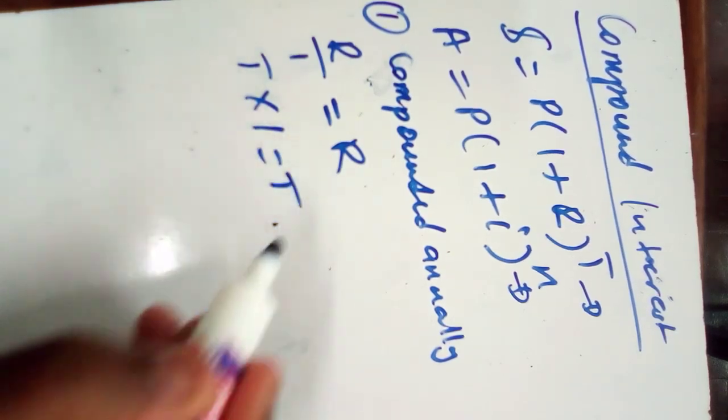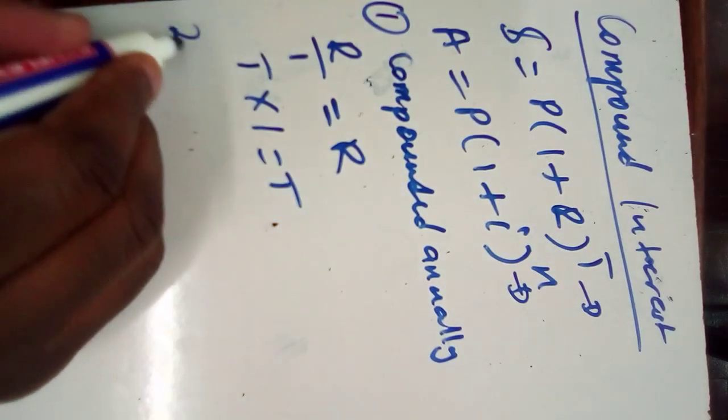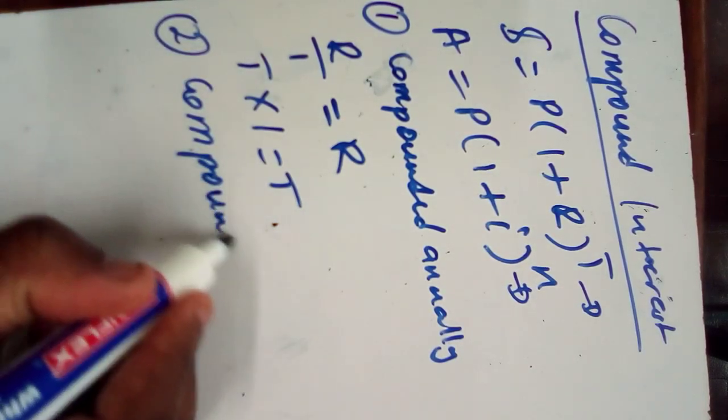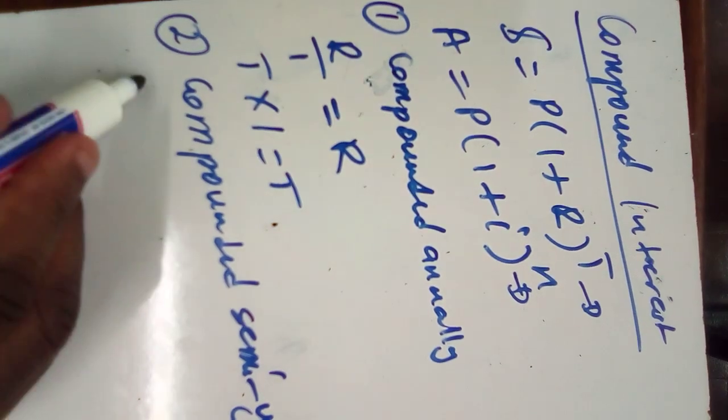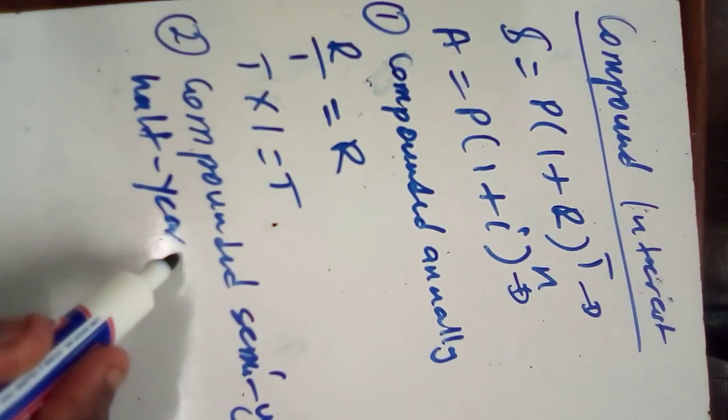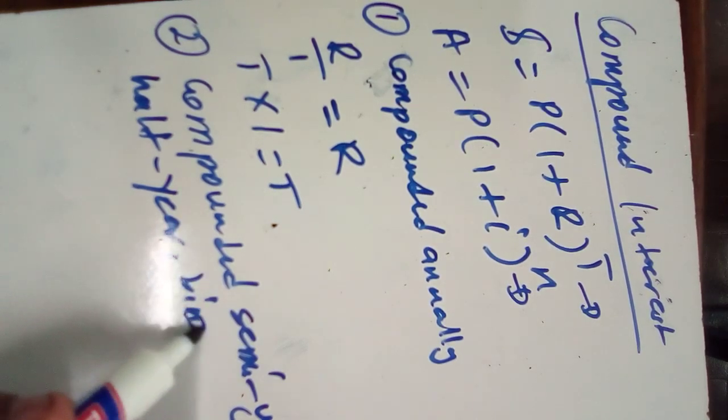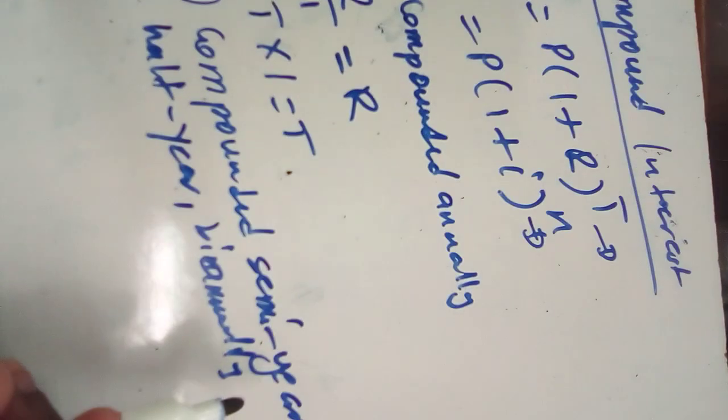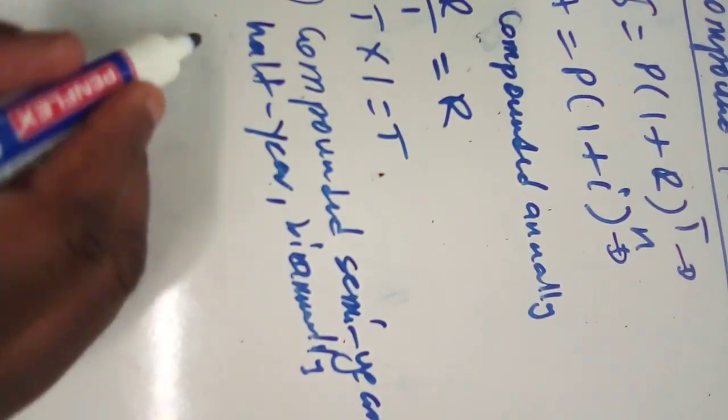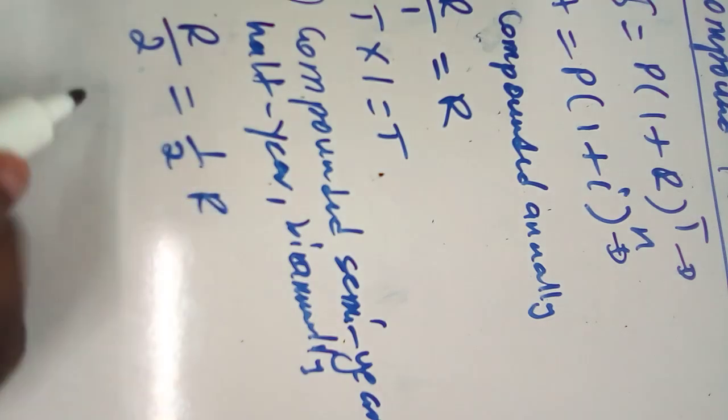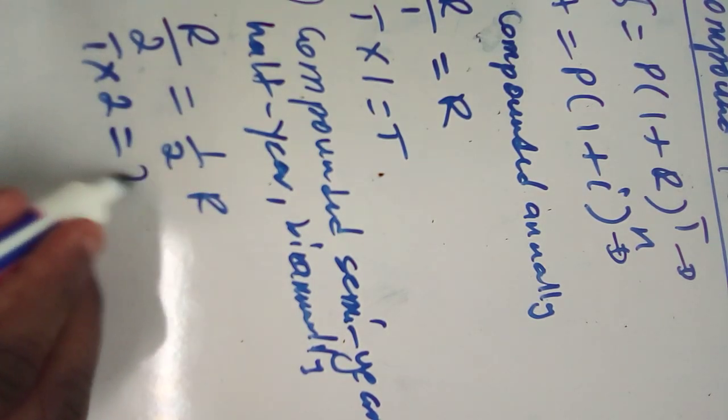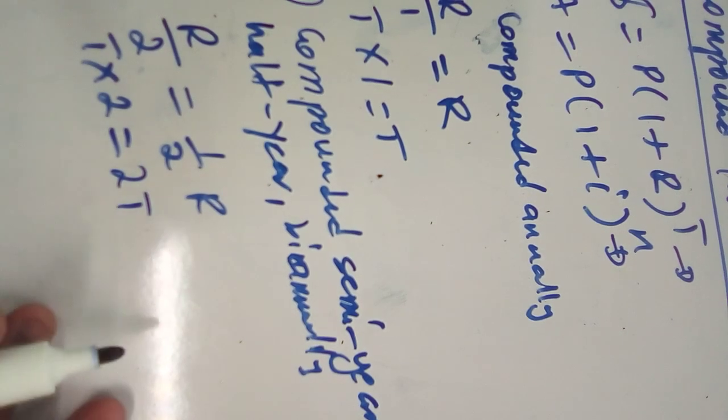But secondly, if it's compounded semi-annually, it can be half yearly, it can be bi-annually. So if you have such things, semi-annually, half yearly, bi-annually, what you need to do is your R you're going to divide it by two, so this is gonna be R over 2. Then your T you will multiply it by two, which is gonna be 2T. So it's when it's half yearly.